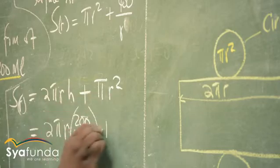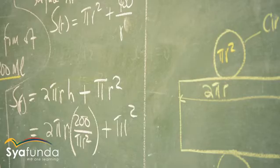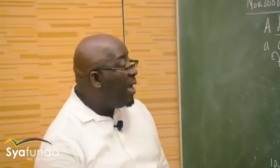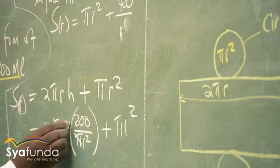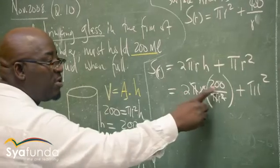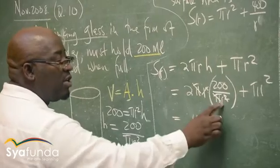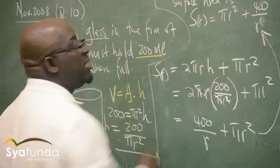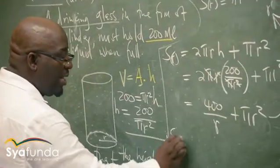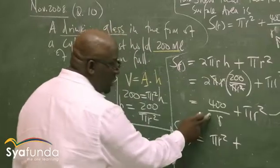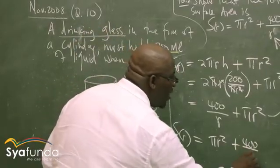So the surface area becomes 2 pi r times 200 over pi r squared, plus pi r squared. Now we cancel: pi cancels with pi, and r cancels with one power of r squared, leaving r in the denominator. So 2 times 200 is 400 over r. The result is pi r squared plus 400 over r, which is exactly what we wanted to get.